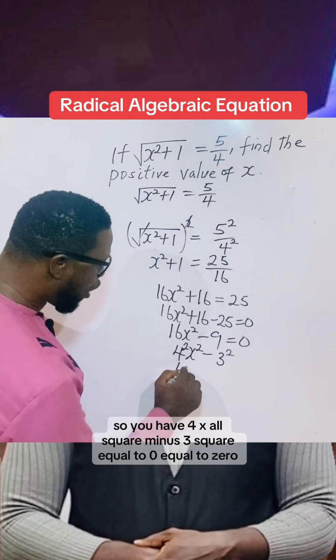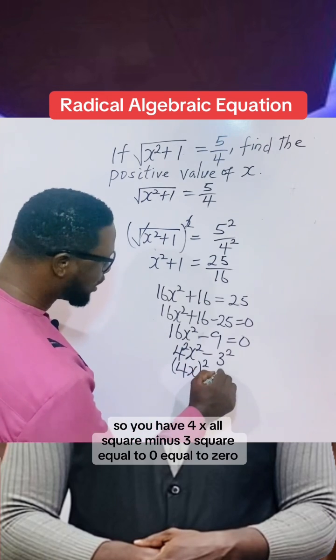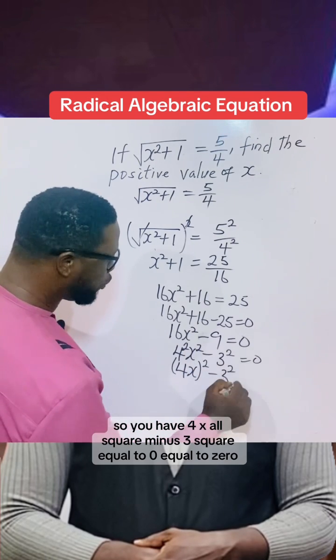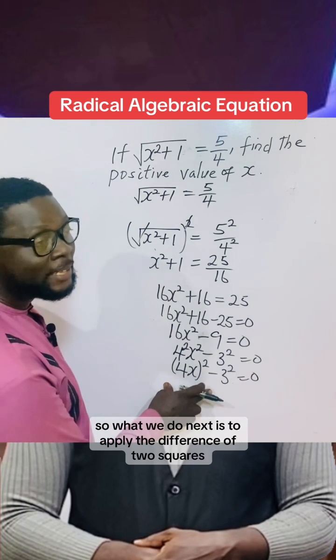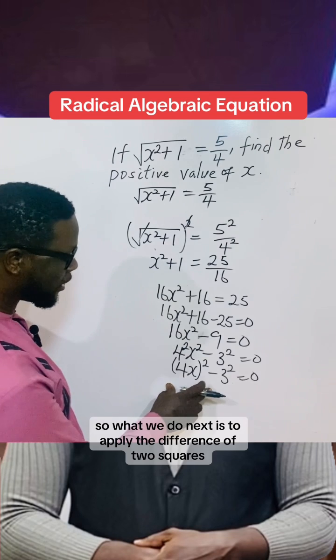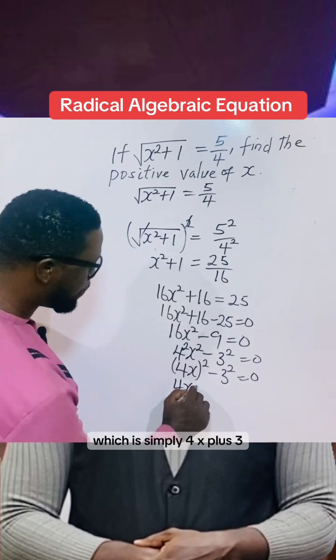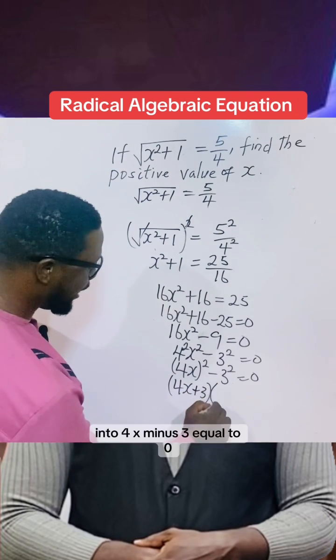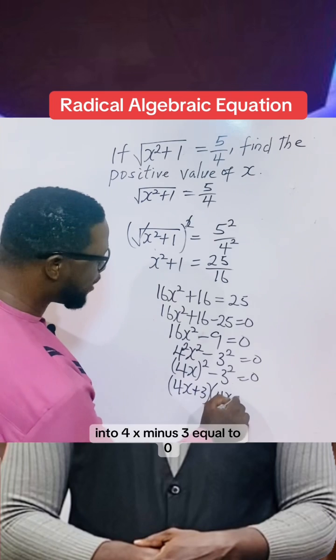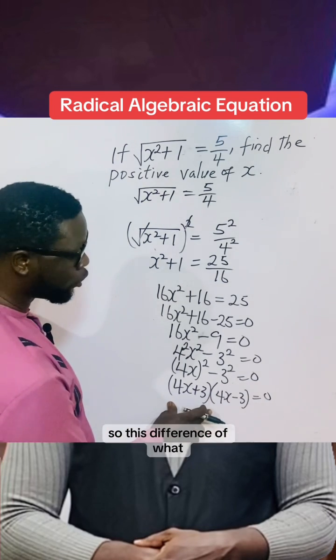What we do next is apply the difference of two squares, which is simply (4x + 3)(4x - 3) = 0. So this is the difference of two squares.